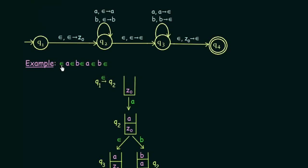Initially we have an epsilon symbol as the first symbol in our string. We are in state q1, and in q1 if you get epsilon it does not pop anything but just pushes the first element z0 to the stack. So we are in state q1, we get epsilon, it goes to state q2 and pushes z0 to the stack.